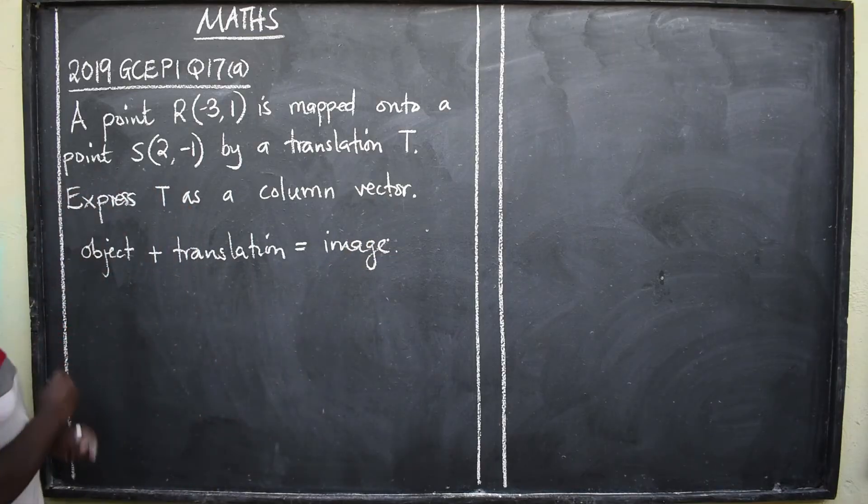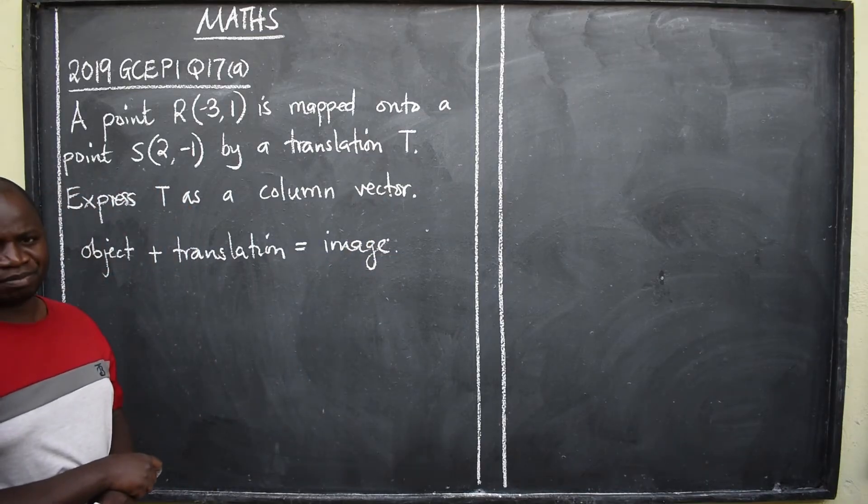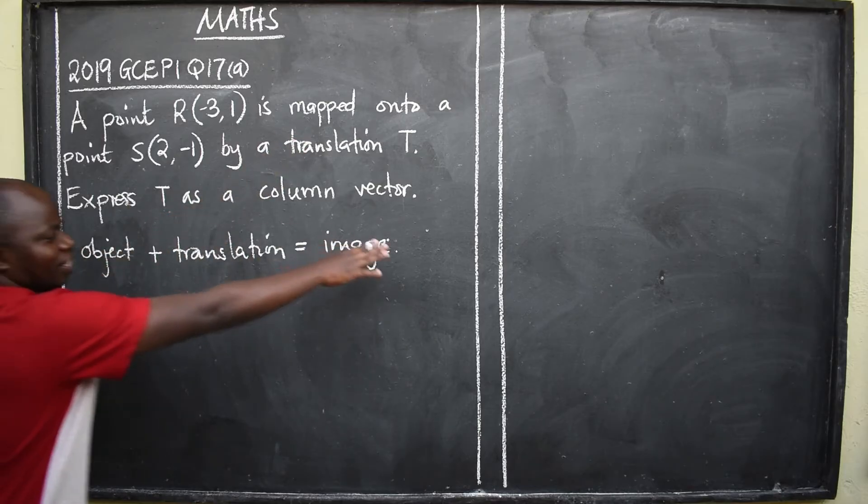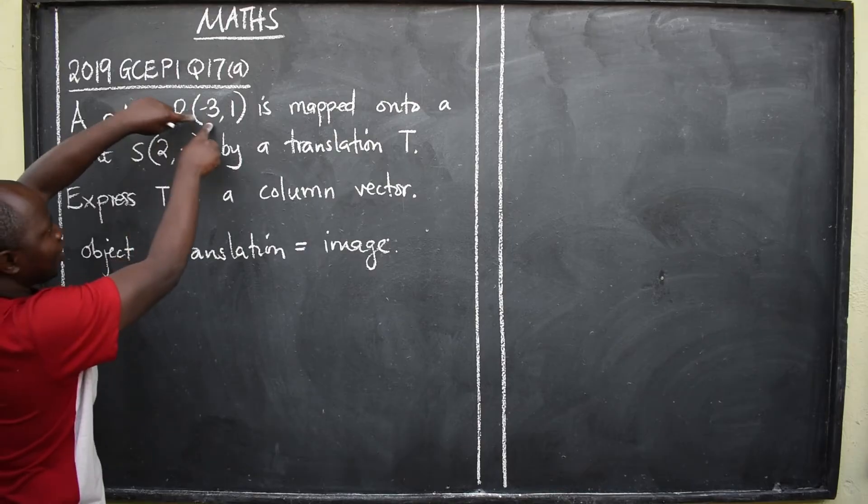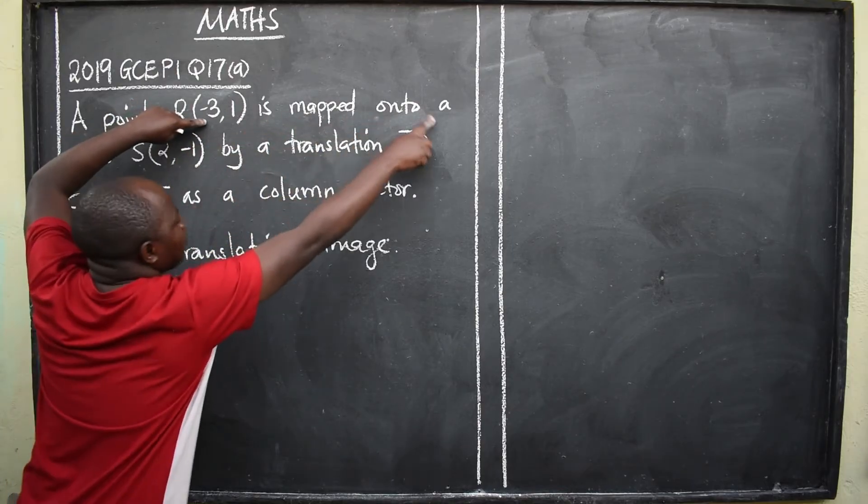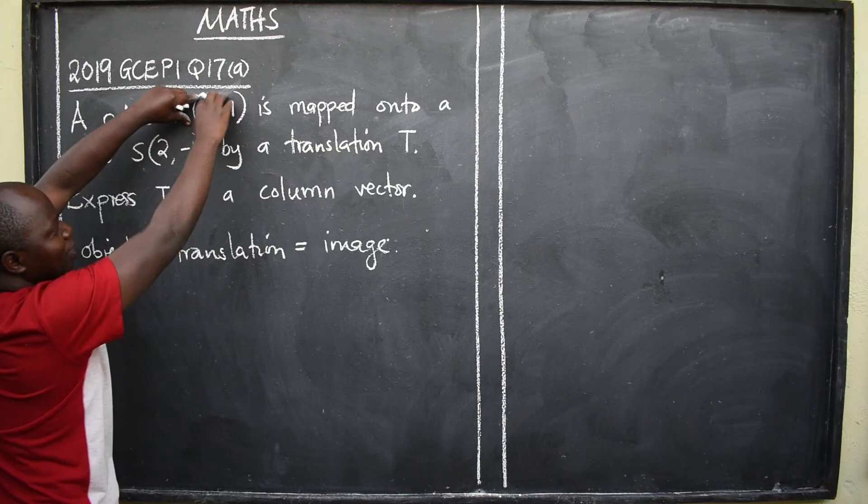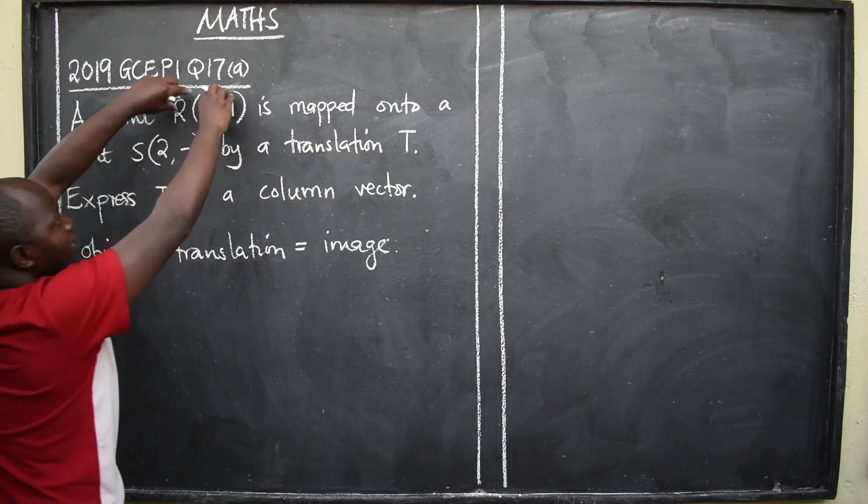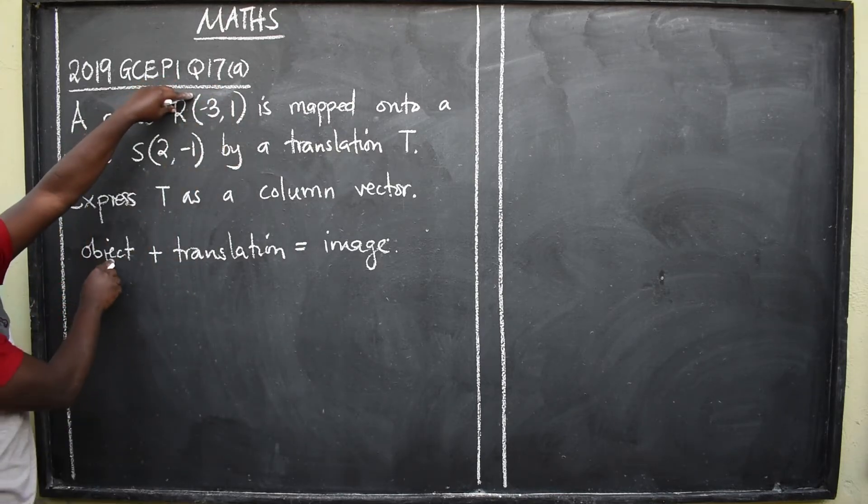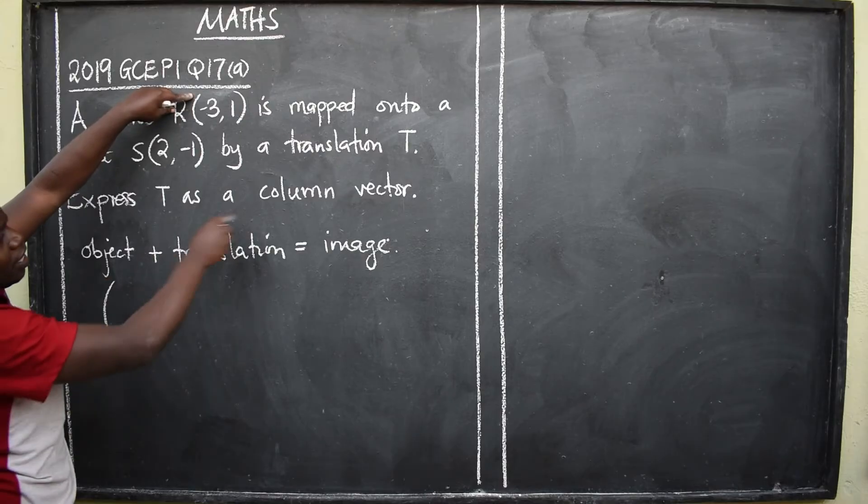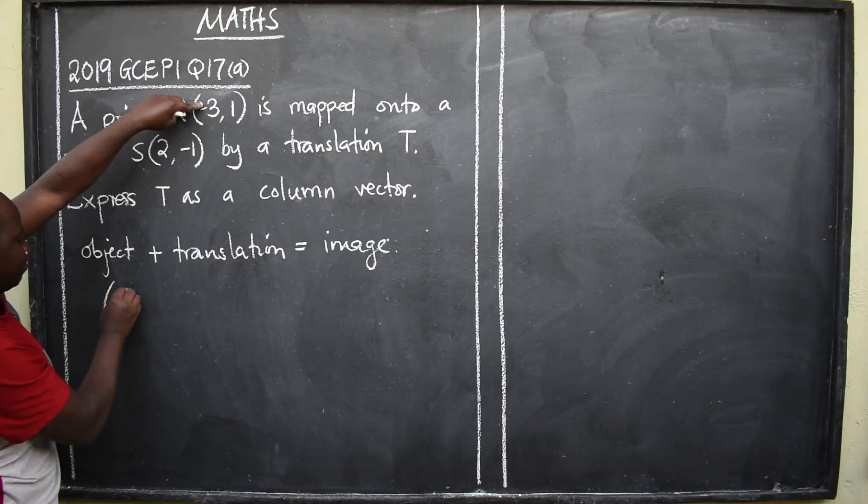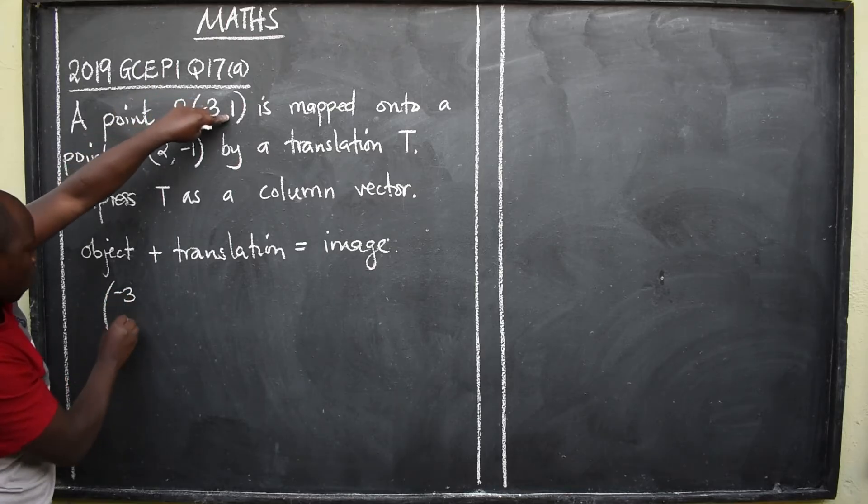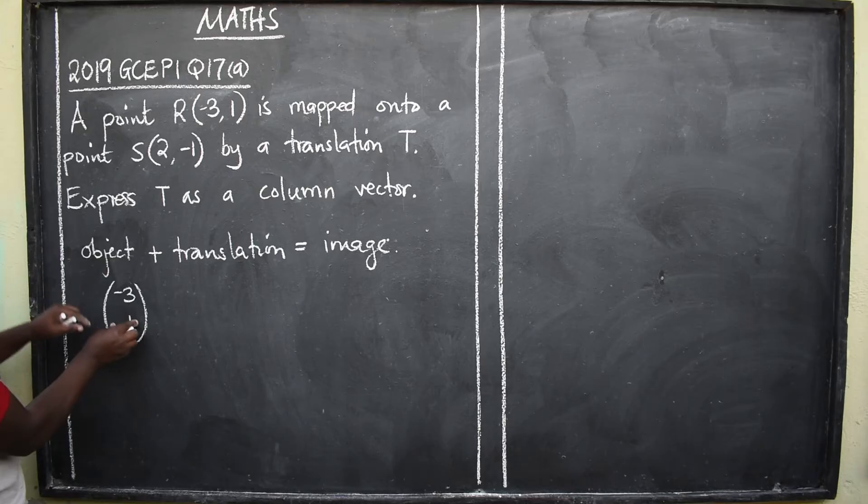This is the formula that you should always remember. Now, which one is object, translation, and image here? Well, we are saying a point R is mapped onto point S, meaning R is our object. So, you are going to write them in column vector, which is negative 3 here, 1. That is the object. You just write them in this manner.